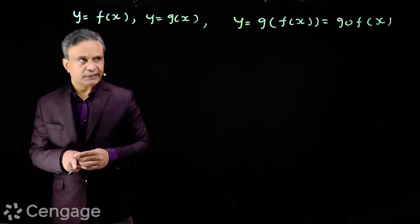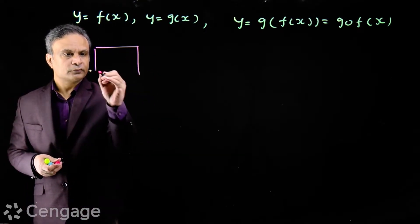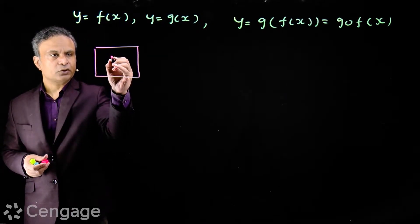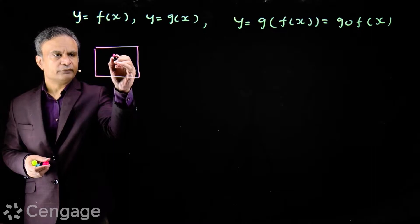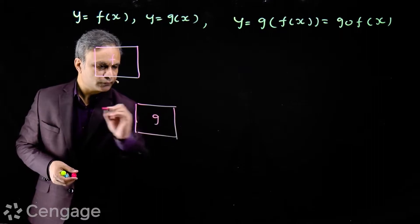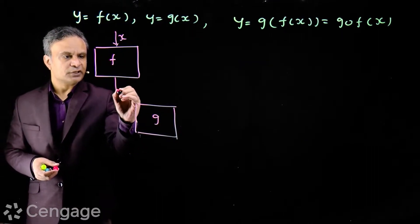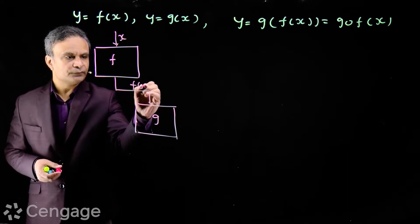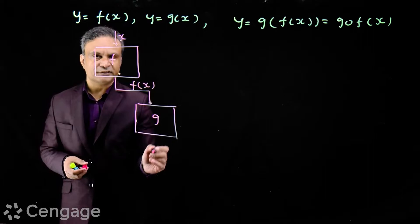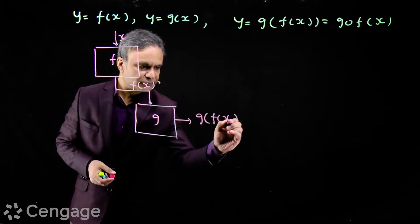We can describe it like this. You can draw this diagram: this is the function machine of f and this is the function machine of g. Here x goes in and f(x) comes out, and this f(x) is the input value to function g(x), and here comes out g(f(x)).